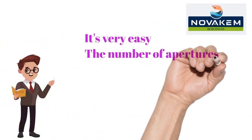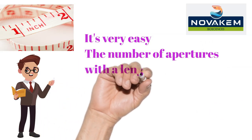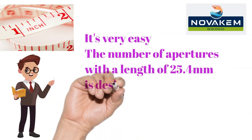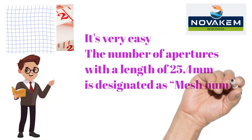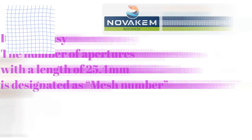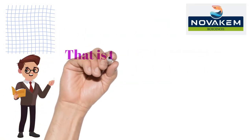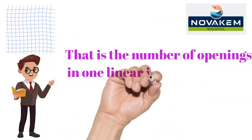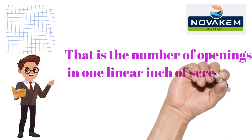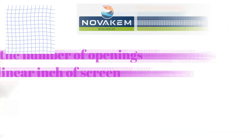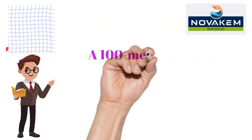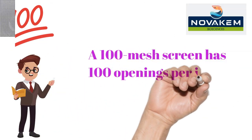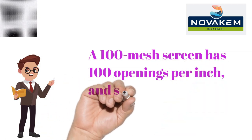The number of apertures within a length of 25.4 millimeters is designated as the mesh number. That is the number of openings in one linear inch of screen. A 100 mesh screen has 100 openings per inch, and so on.